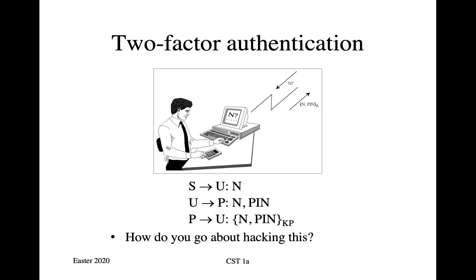Going back now to the civilian world, two-factor authentication started in about 1981, with a product called the Rekal Watchword, which appeared to be just a calculator. Rekal sold this to various post offices, because they wanted to make sure that they could tell that their engineers logging on to systems were genuine. This has since become a very common authentication mechanism. In the original Rekal mechanism, how it works is as follows.